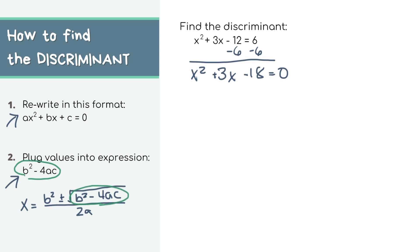For our example, our a value equals 1, b equals 3, and c equals negative 18. When we plug the values into this expression, b squared minus 4ac, we'll get 3 squared minus 4 times 1 times negative 18. This all simplifies to 81. And that is our discriminant.